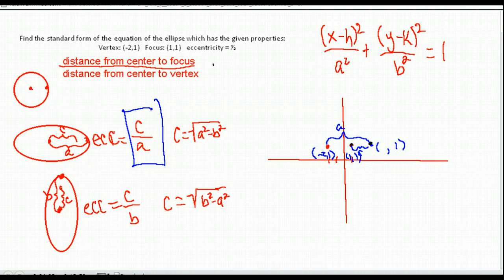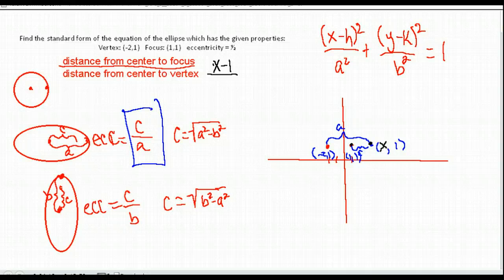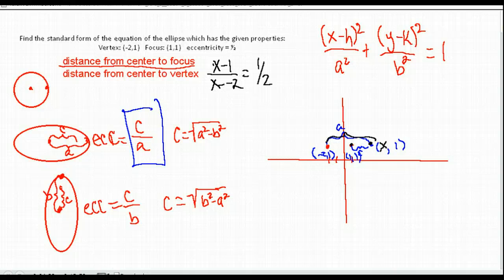C is the distance from the center to the focus point, so it's |x − 1|. A is the distance from the center to the vertex, so it's |x − (−2)| = |x + 2|. Setting that ratio equal to 1/2 gives us our equation.